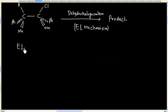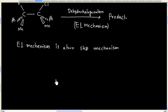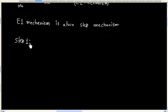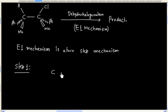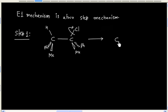E1 mechanism is a two-step mechanism. In the first step, the leaving group departs the molecule and a carbocation is formed.